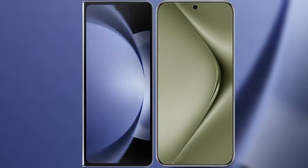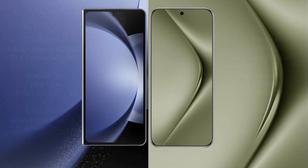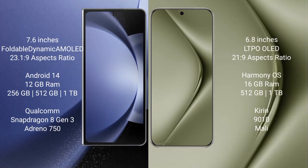I will compare the new Samsung Galaxy Z Fold 6 with the Huawei Pura 70 Ultra. Samsung Galaxy Z Fold 6 comes with a 7.6-inch foldable Dynamic AMOLED display and Snapdragon 8 Gen 3 processor. Huawei Pura 70 Ultra has a 6.8-inch Dynamic OLED display and a Kirin processor.